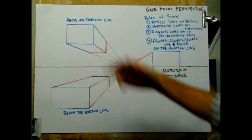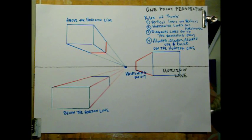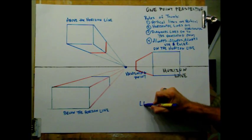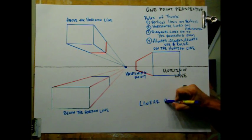Use a ruler. All right. So here's our above, below, on the horizon line, one-point perspective. Again, this is linear perspective.